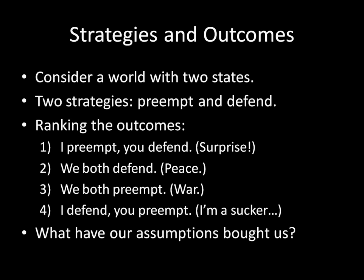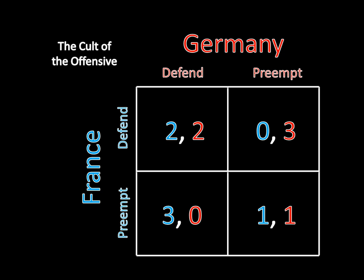We can summarize all of this information into a game matrix. This is the Cult of the Offensive game — France versus Germany. Both can defend or preempt. France's best outcome, represented by the number 3, is preempting while Germany defends. The next best outcome for both defending is 2. The next best is both preempting, worth 1. The worst outcome — a 0 — is France defending while Germany preempts, putting France in the sucker's position. Germany's payoffs are symmetric: Germany's best outcome is preempting while France defends, and Germany's worst is defending while France preempts.